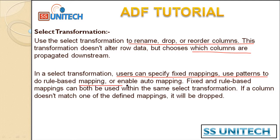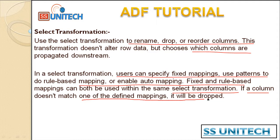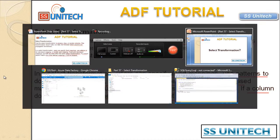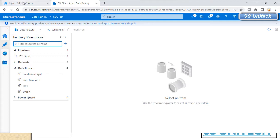In the select transformation, users can specify fixed mapping or use patterns to do rule-based mapping. Auto mapping can also be enabled. Fixed and rule-based mapping can both be used within the same select transformation. If a column does not match one of the defined mappings, it will be dropped — we will see that in the practical.